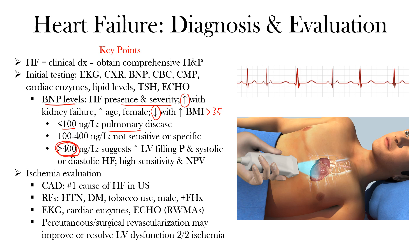A BNP over 400 has high sensitivity and a high negative predictive value for heart failure. Values between 100 and 400 are not sensitive or specific, so you need to do more investigation to determine what's going on with the patient.